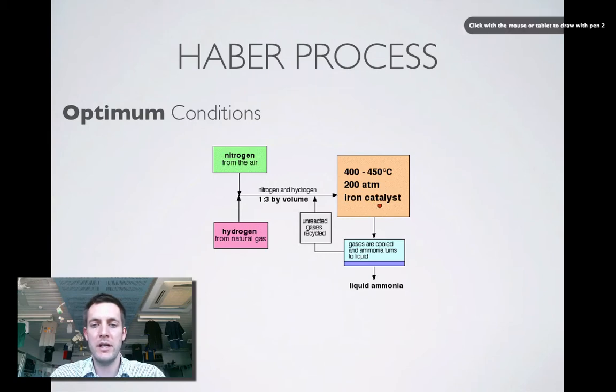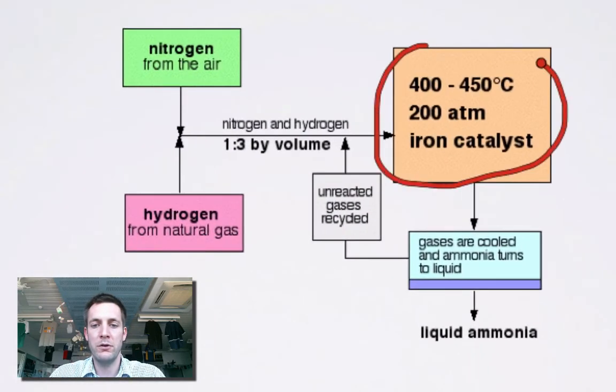Now look here at the conditions that we've chosen. We've got 400 to 450 degrees centigrade, which really isn't all that high in the grand scheme of things. We can go much higher than that, but we're heating it up because they don't want the rate to drop too low. As particles speed up, there's going to be a greater proportion of them with enough energy to react, so the rate will increase. If you start with nitrogen and hydrogen, you're going to get to equilibrium quicker. But they're not going too high because high temperatures are going to reduce the yield.